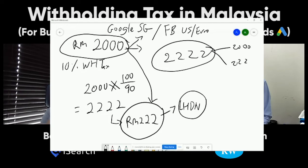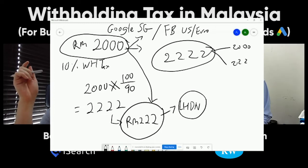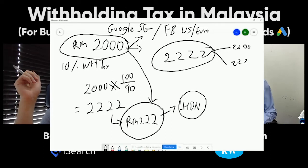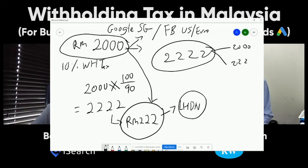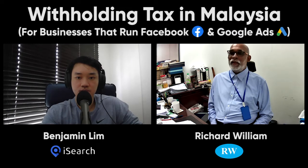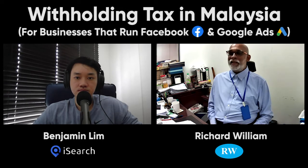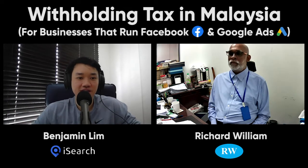For Google and Facebook it's 10%. What about other ad platforms like TikTok or YouTube? For royalty, generally it's all 10%. However, it depends on which country the entity is incorporated in. If TikTok incorporates a Malaysian entity, there won't be any withholding tax. Similarly, if Google and Facebook incorporated a company in Malaysia, there'd be no withholding tax. It's because they're incorporated overseas that businesses have to pay this withholding tax — an extra cost to business.